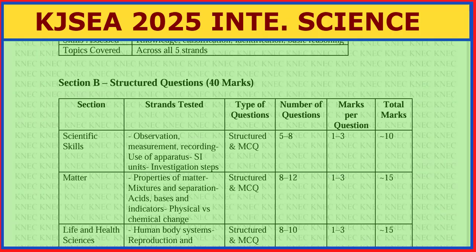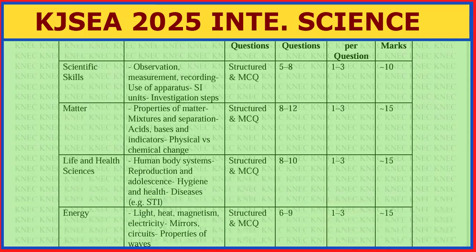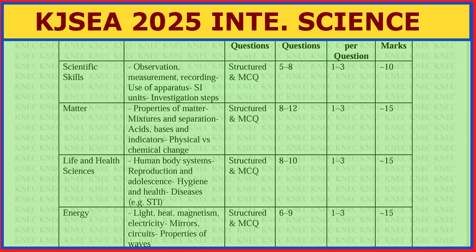That gives us 15 marks in the matter strand. Then we have Life and Health Sciences, which covers nutrition, human body systems, reproduction and adolescence, menstrual hygiene and sanitary products, and diseases including STIs and so on. Structured and multiple choice questions — eight to ten questions, each carrying one, two, or three marks — give us 15 marks.